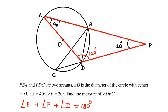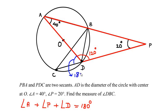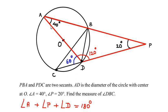For the secant PDC, it enters the circle and touches it at two points: point D and point C. Since a secant is a straight line, we can find the value of angle ADC. The total angle on a straight line is 180 degrees. We found angle ADP as 120 degrees, so the remaining angle ADC is 180 minus 120, which gives us 60 degrees.